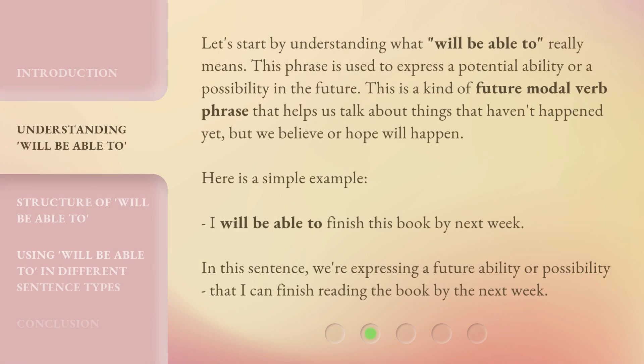Let's start by understanding what 'will be able to' really means. This phrase is used to express a potential ability or a possibility in the future. This is a kind of future modal verb phrase that helps us talk about things that haven't happened yet, but we believe or hope will happen. Here is a simple example: 'I will be able to finish this book by next week.' In this sentence, we're expressing a future ability or possibility that I can finish reading the book by next week.